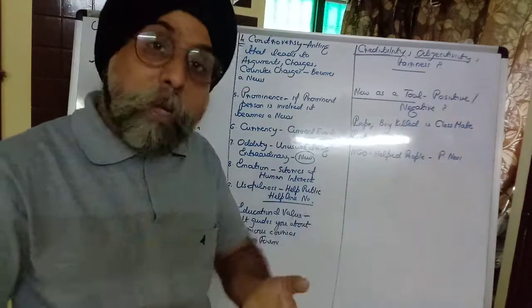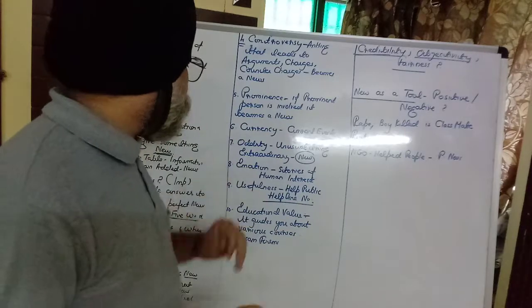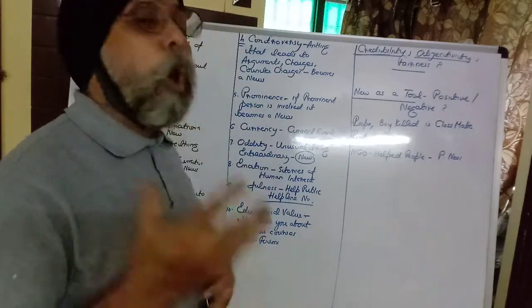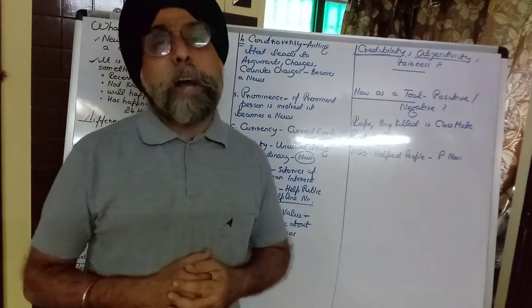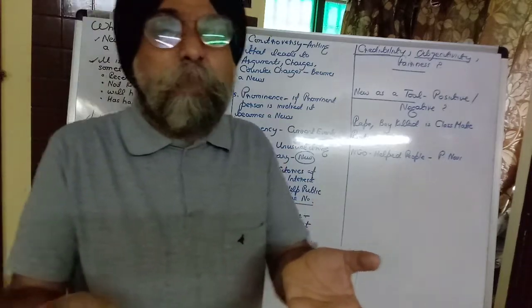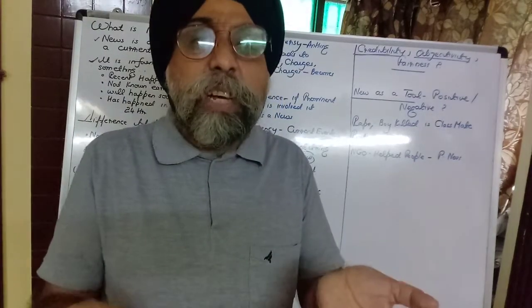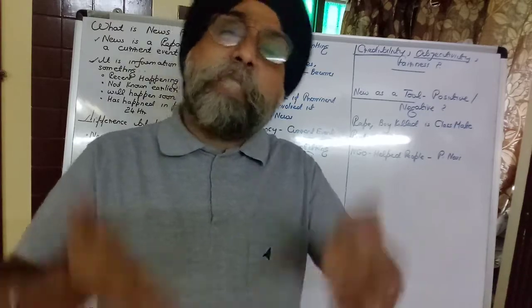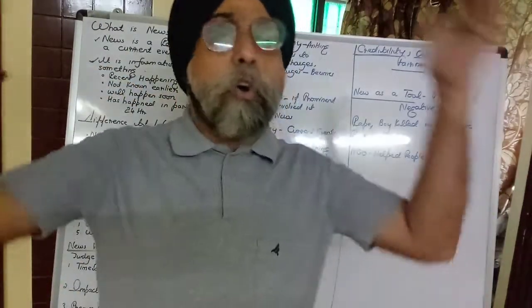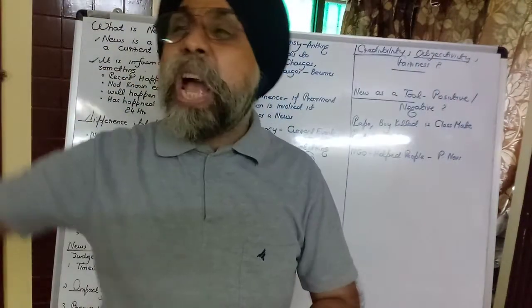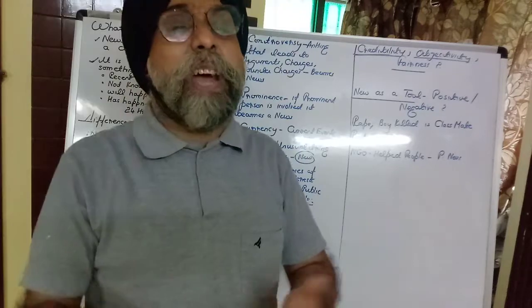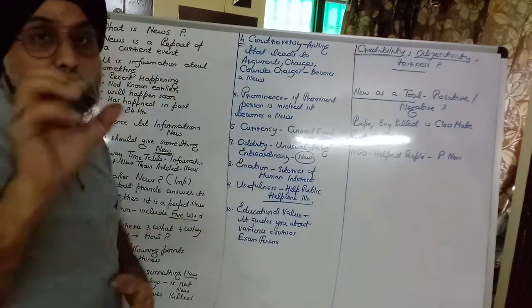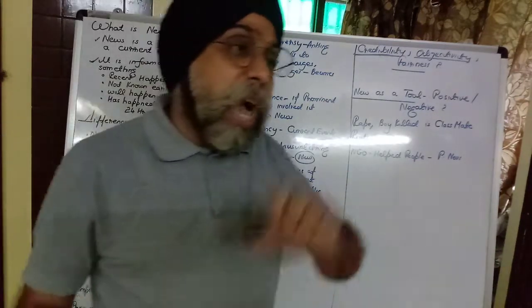Next is currency — it means current events. News should be about current events. After that comes oddity — news which has something extraordinary or unusual about it. Ordinary daily life is not news; something different or extraordinary makes it news.